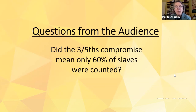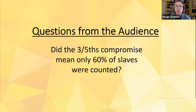A common question: does the three-fifths compromise mean only 60% of the slaves were counted? The answer is no — all the slaves were counted. But their total in a state, say 100 slaves, counted for only 60 people in the apportionment formula. So all slaves were counted. We have very good data on the slave as well as the free population. We have very poor data on American Indians because they were not to be included in the census.